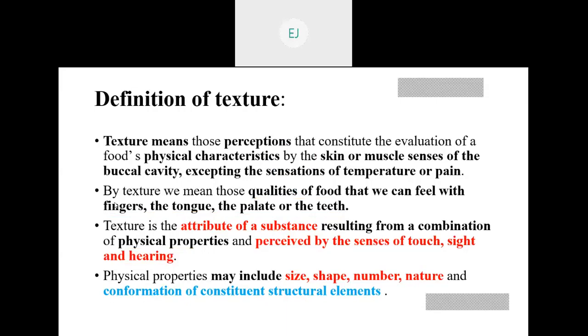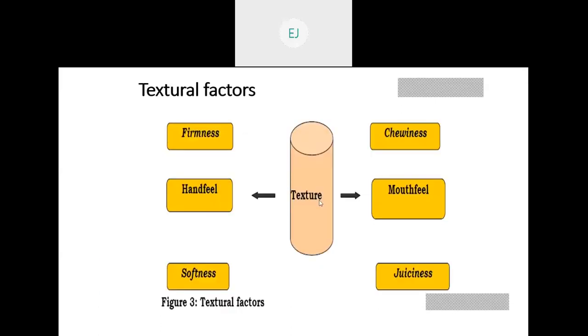So texture means the attributes of a substance resulting from a combination of physical properties, which you can perceive by the sense organs like finger, tongue, palate, and teeth. How we can feel the texture factor — if you think of a food, by touching it you can feel the firmness and hand feel, and also understand the softness. If you taste with the tongue or your teeth, then you can feel the sweetness, mouthfeel, and juiciness of that food.